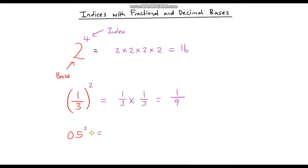So again the process is exactly the same. So we're going to take 0.5 and we're going to multiply that by itself 3 times. So it's 0.5 multiplied by 0.5 multiplied by 0.5.